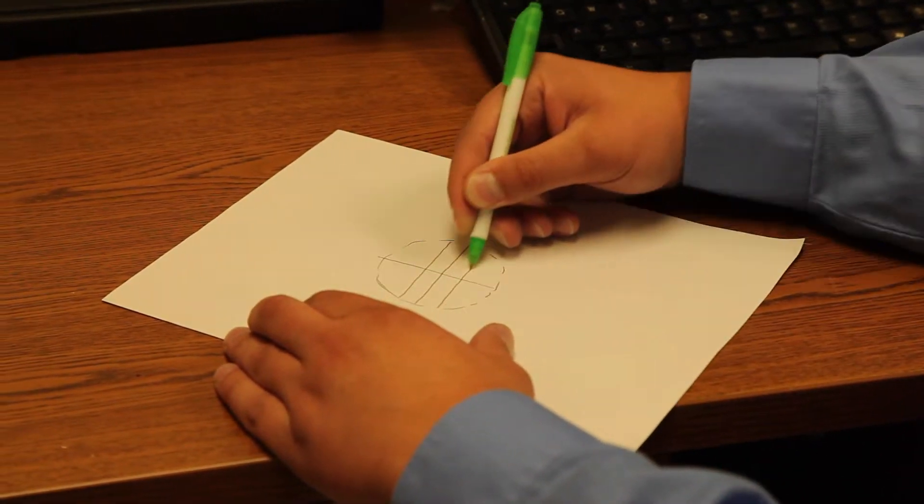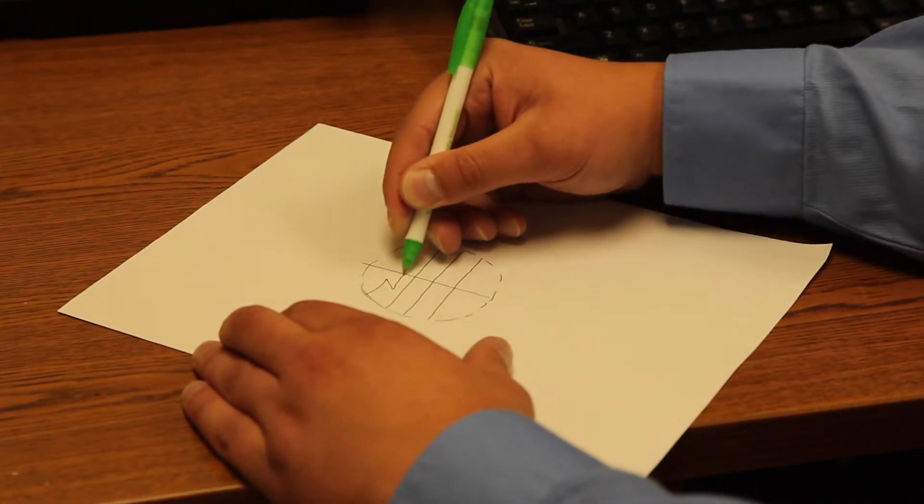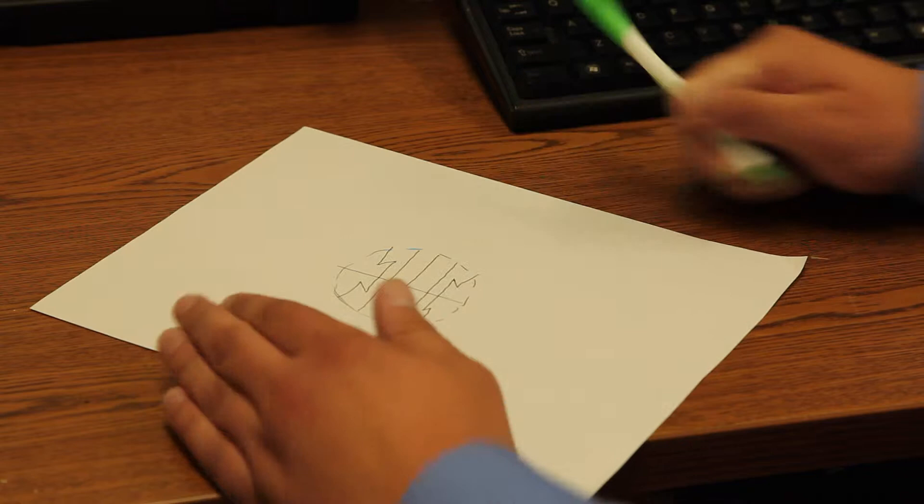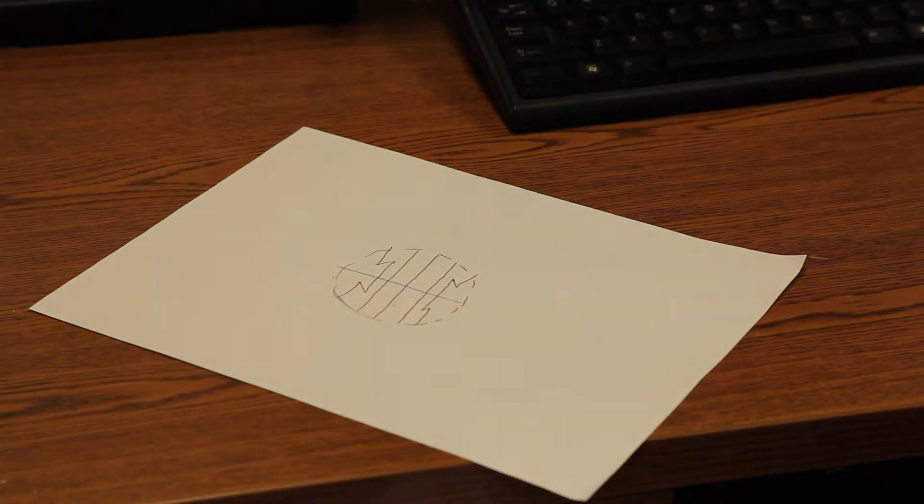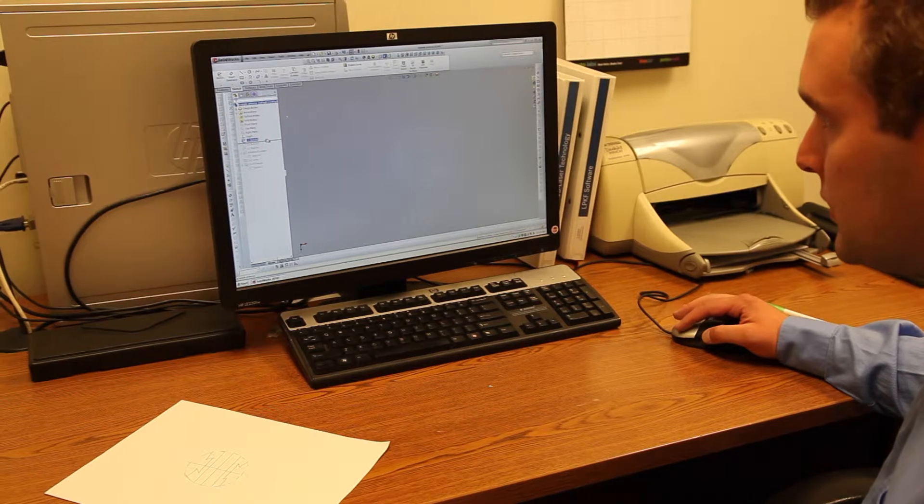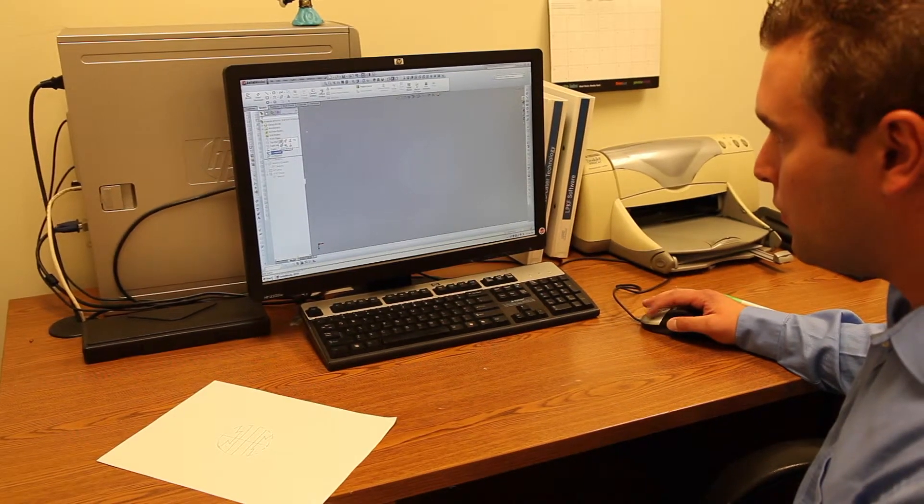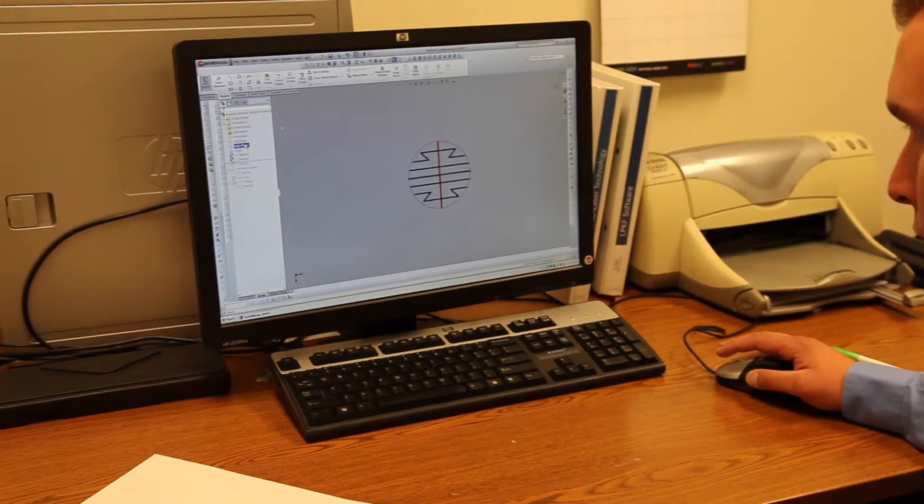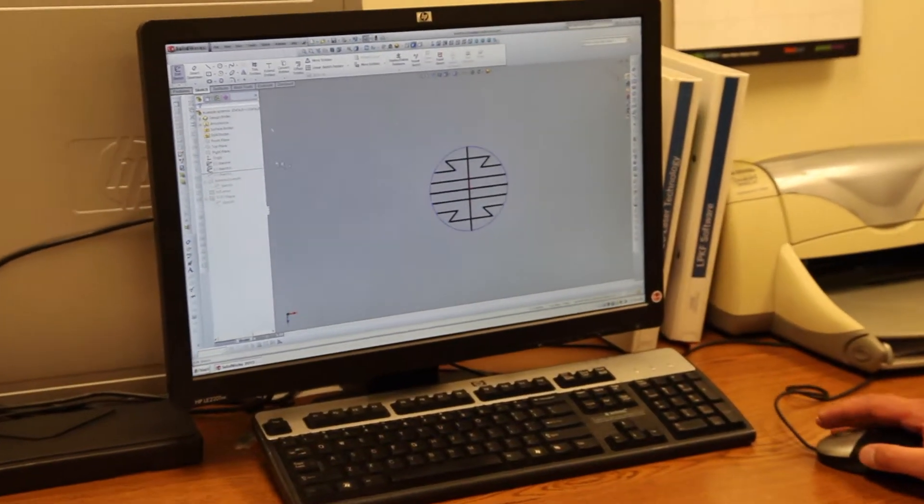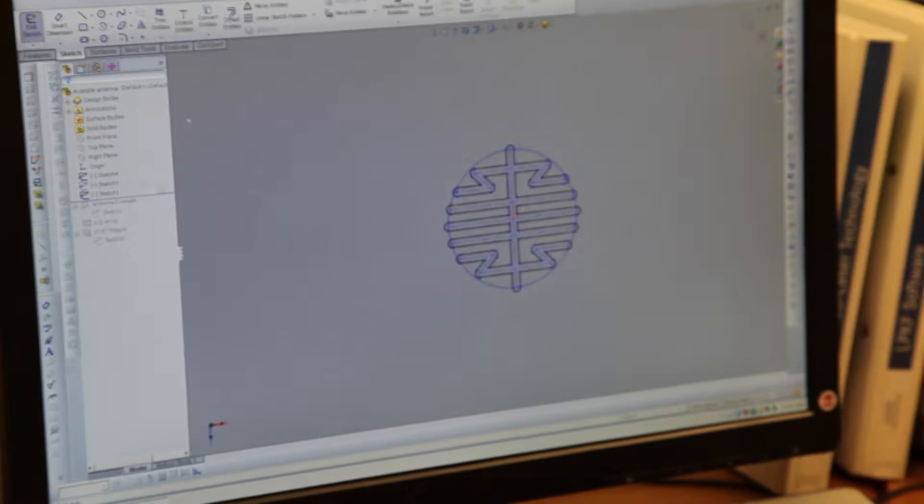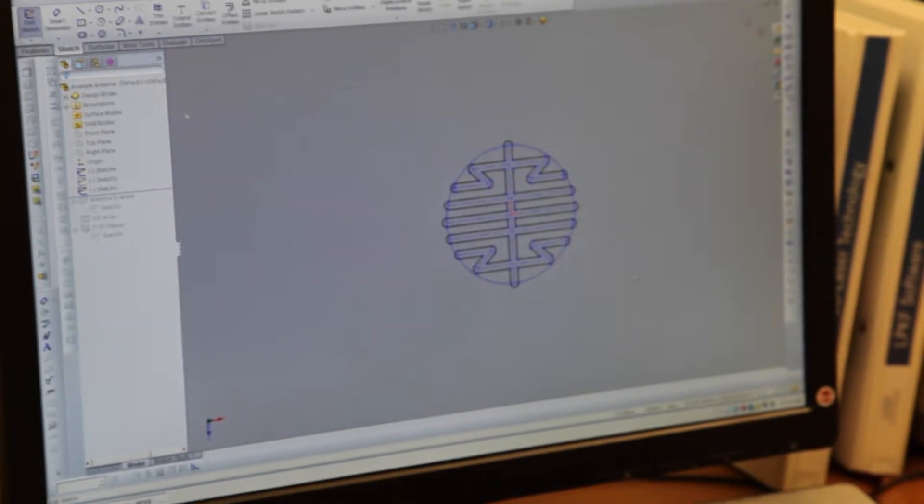So I want my antenna to look something like this. Then once you have the idea, all you have to do is put it into a CAD file. So it starts off with this, and then we go to this, and then the final sketch. So this is our antenna pattern.